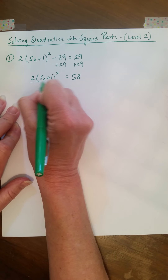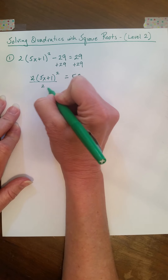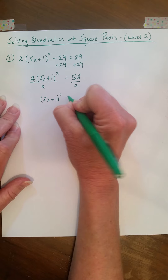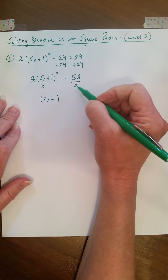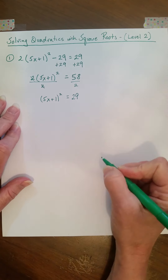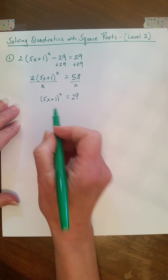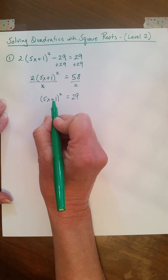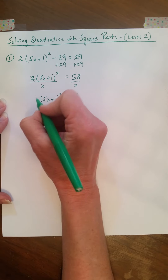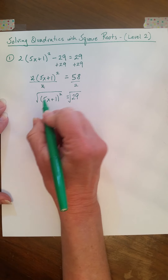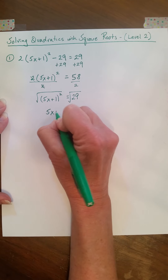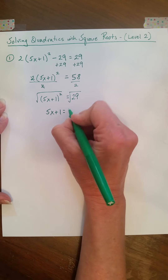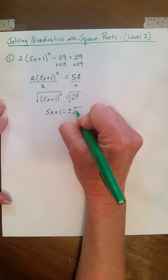Now I need to get rid of this coefficient of 2, so I'm going to divide by 2. On the left I have the quantity 5x plus 1, squared, equals. Now, 58 divided by 2 — oddly enough, that takes me back to 29. Now what I have on the left side is a square, so to isolate x I first need to take the square root of both sides to get rid of the quantity squared. I'm left with 5x plus 1 equals. Now the square root of 29 is not a perfect square, so I've got plus or minus the square root of 29.